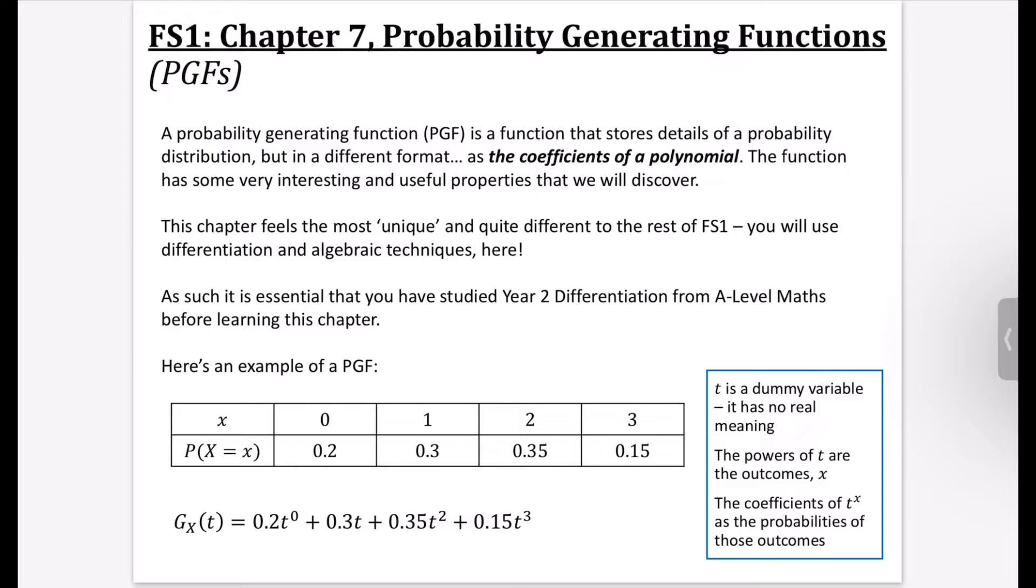We're going to look at six different properties. And this is actually probably one of my favorite chapters of Further Stats. It might be my favorite chapter, simply because it just feels the most unique, and it feels really different to the rest of Further Stats 1. You're going to be using lots of algebraic techniques and differentiation. It still will have things about the other distributions, like geometric and negative binomial, but it's really easy to identify one of these questions, and it definitely feels like the most different. So I quite like it just because it feels quite fresh and different to some of the other bits we've looked at.